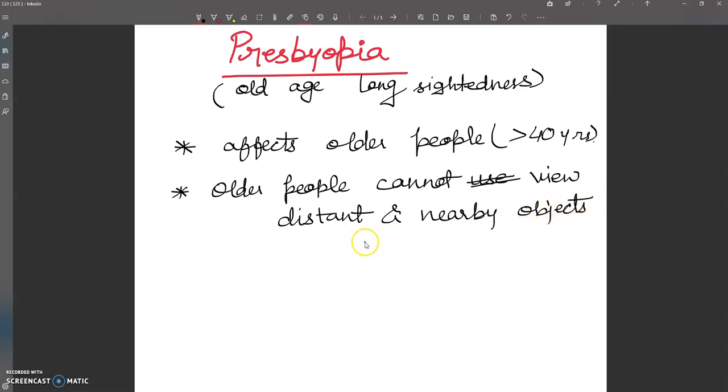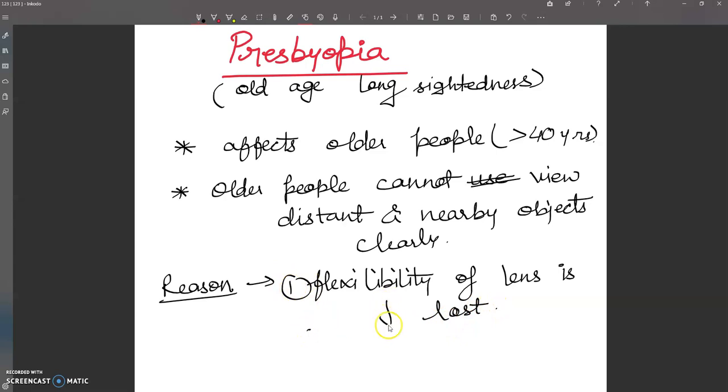And the other point is, what is the reason for this presbyopia? So the reason is loss of flexibility of lens. The flexibility of lens is lost, and there will be failure of accommodation in the eye. Accommodation in the eye fails.